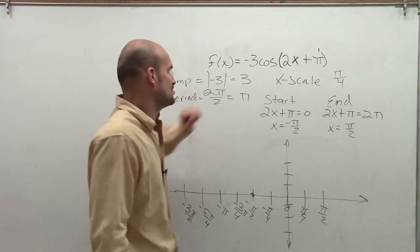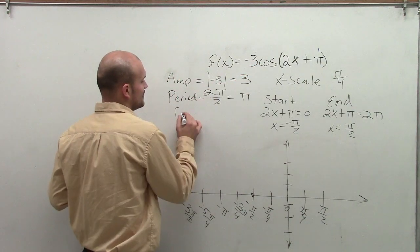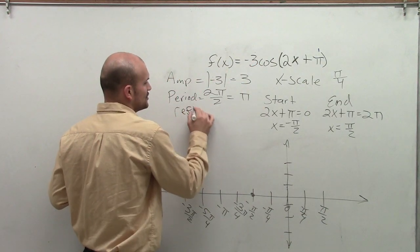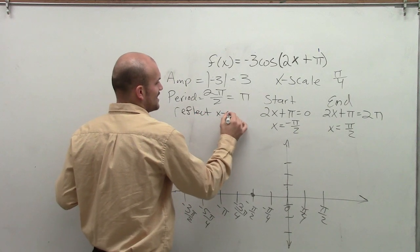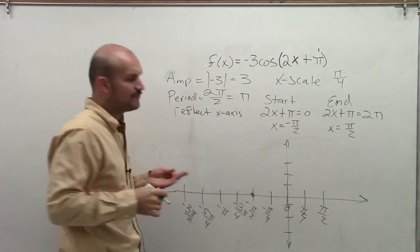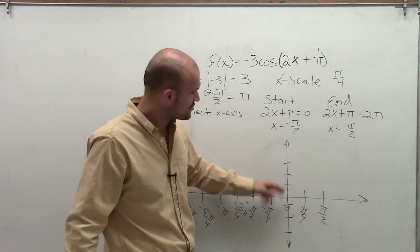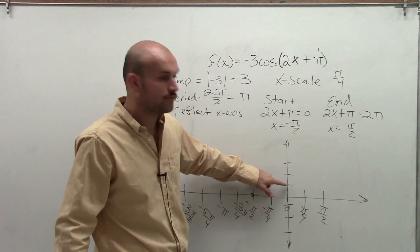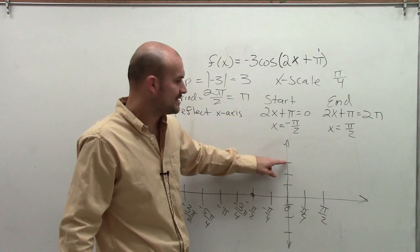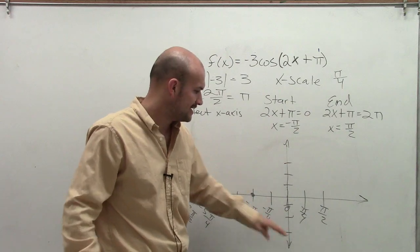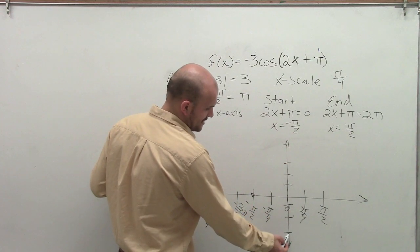Now we also notice that we have a reflection. So we have that negative. Multiplying by a negative would tell us we're going to reflect about the x-axis. So when we want to reflect about the x-axis, what that's going to tell us is rather than starting at our current point of (0,1), well, now with an amplitude of (0,3), we have to reflect that about the x-axis. And we're now going to start down at (0,-3).